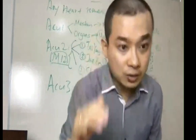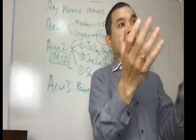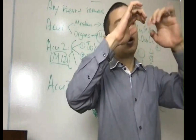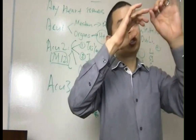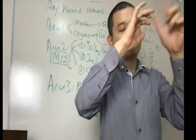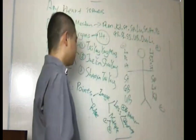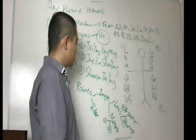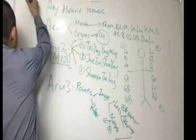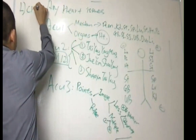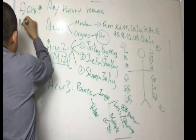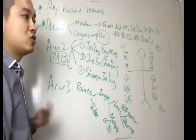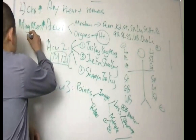We put our fingers on the pulse. Let's say the patient is female. I put both hands on top — Cun, Guan, Chi on both sides. For this female patient, the left hand Chi position is the strongest. So I feel Chi first — strongest. Left Chi for a female is Ming Men. Therefore we make a diagnosis: left Chi strongest means Ming Men is strongest.